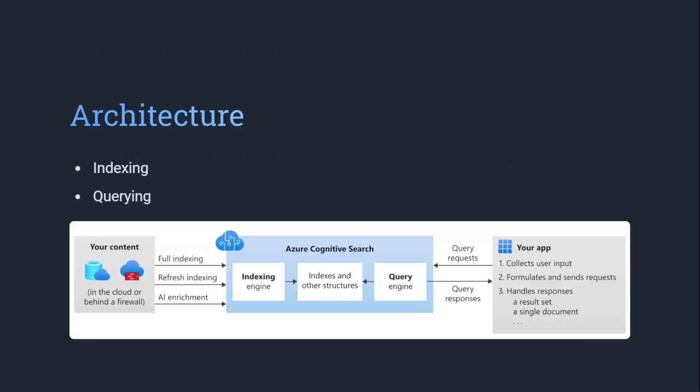What is the basic architecture? You have two parts in the basic architecture: one is indexing, one is querying. Indexing is where you will index the content and then send it to the index, and the querying part is where you will consume the content — you do a query and it returns you the results.